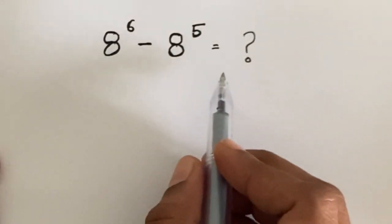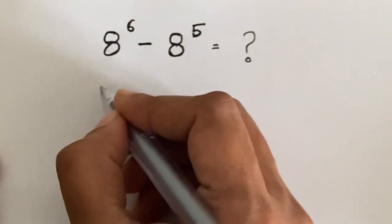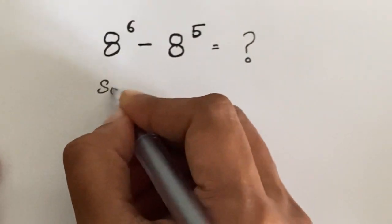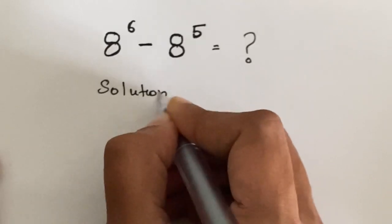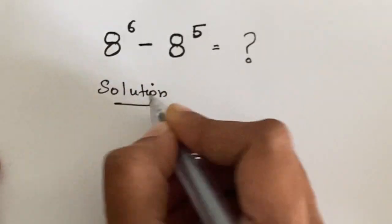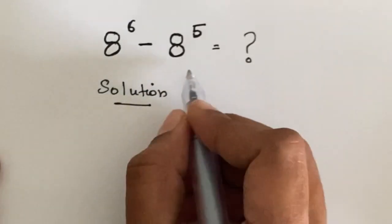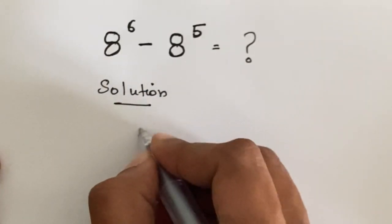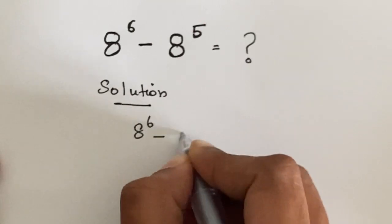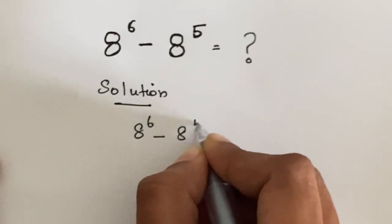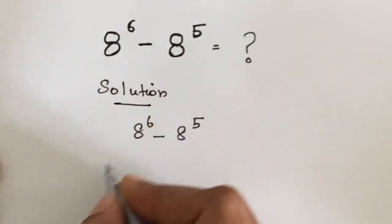Hi, let's simplify this nice math problem: 8 to the power 6 minus 8 to the power 5.